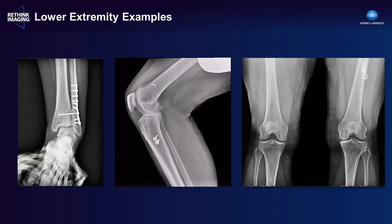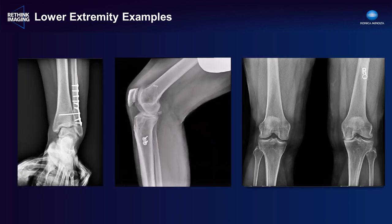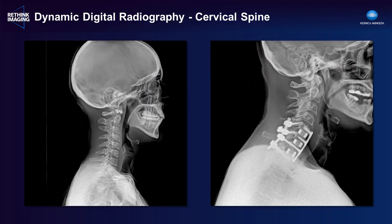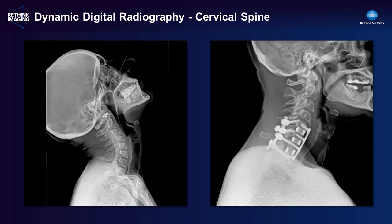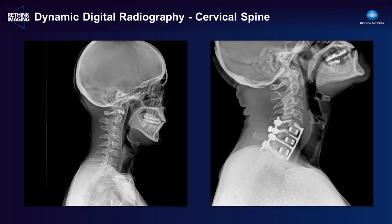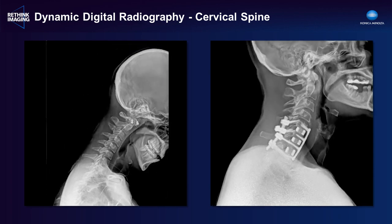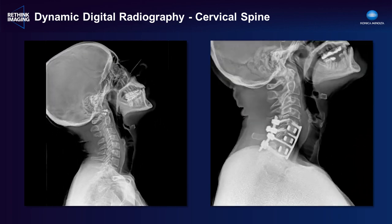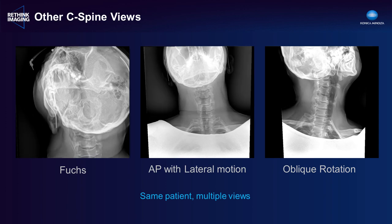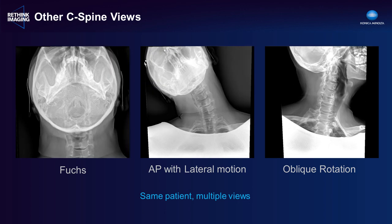Here we show examples of lower extremity exams. The patient on the far right has patellofemoral mistracking on the right knee. The cervical spine is probably where we've seen the fastest adoption of this technology in the United States. The replacement of the lateral flexion-extension exam is a natural fit, giving the radiologist or orthopedic surgeon all the information they would normally have while also being able to see the dynamic changes of the patient's spine. You can also duplicate any of the other standard cervical spine views.